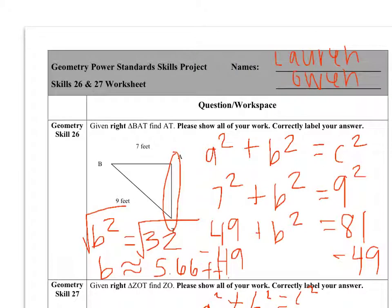So today, we went over two different problems using Pythagorean's theorem. The first one was, given right triangle BAT, find AT. To solve this problem, we used Pythagorean's theorem, entered the given information, and solved for B.